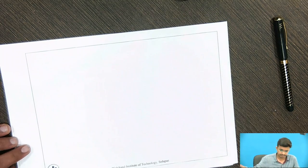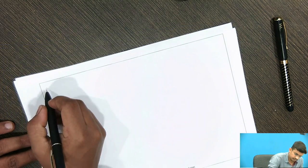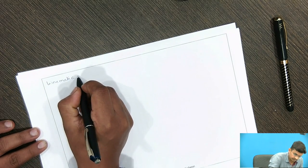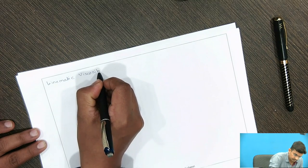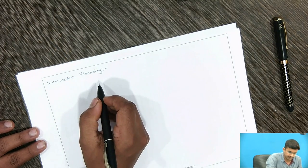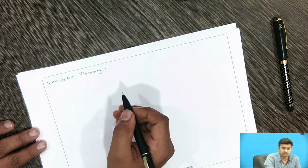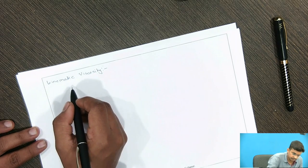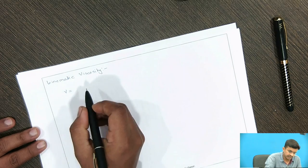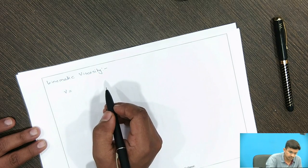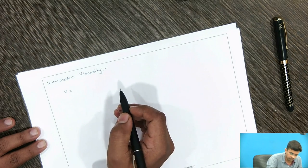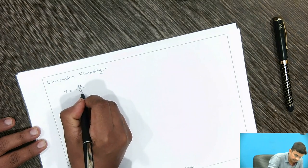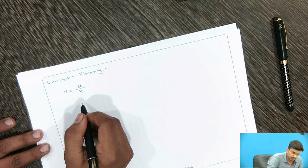Now we will see kinematic viscosity. Kinematic viscosity is defined as the ratio of dynamic viscosity to the density of the fluid. It is denoted by the Greek letter nu. So, nu equals mu divided by rho.